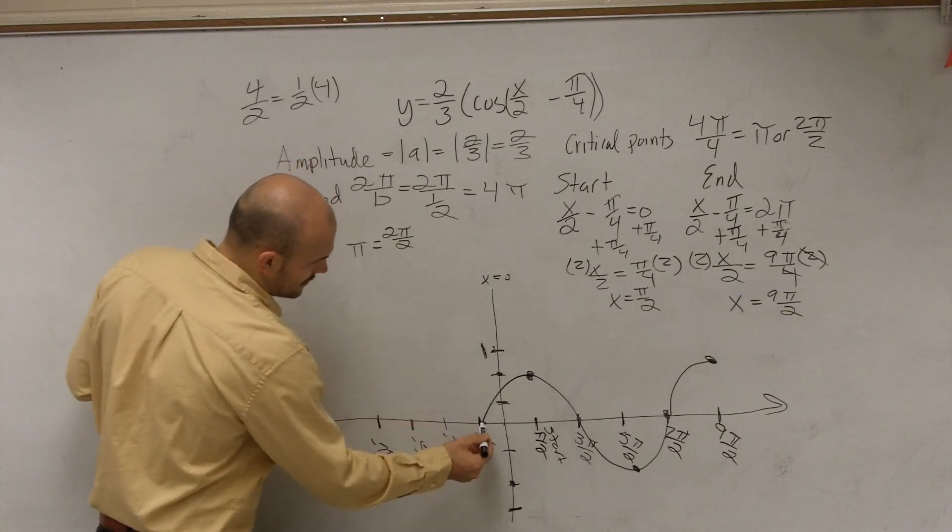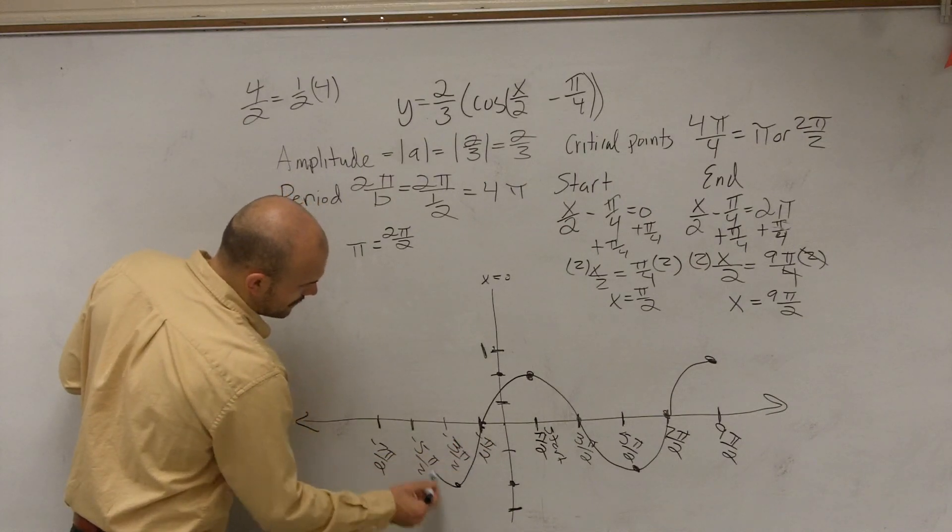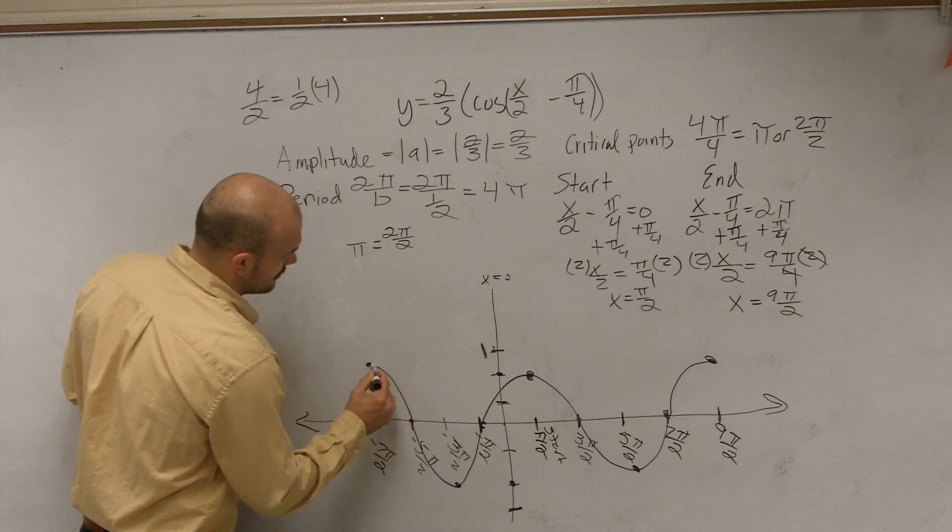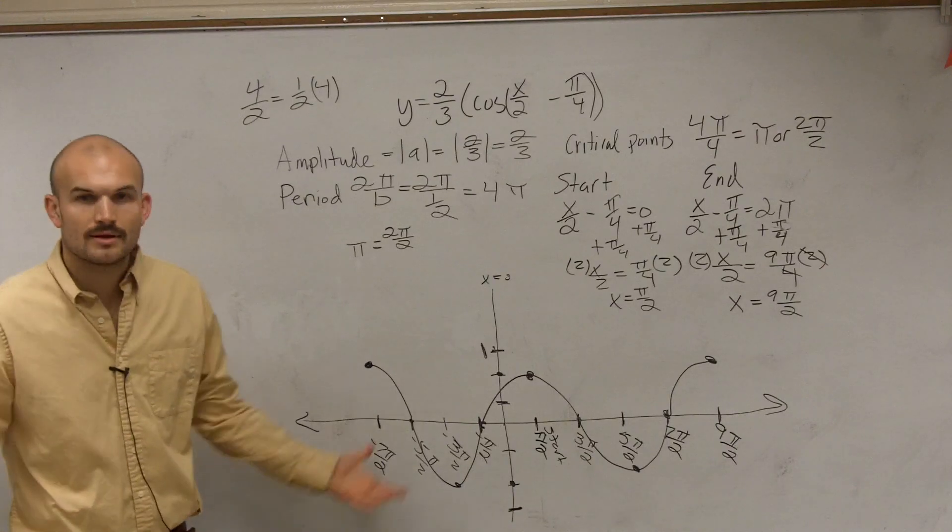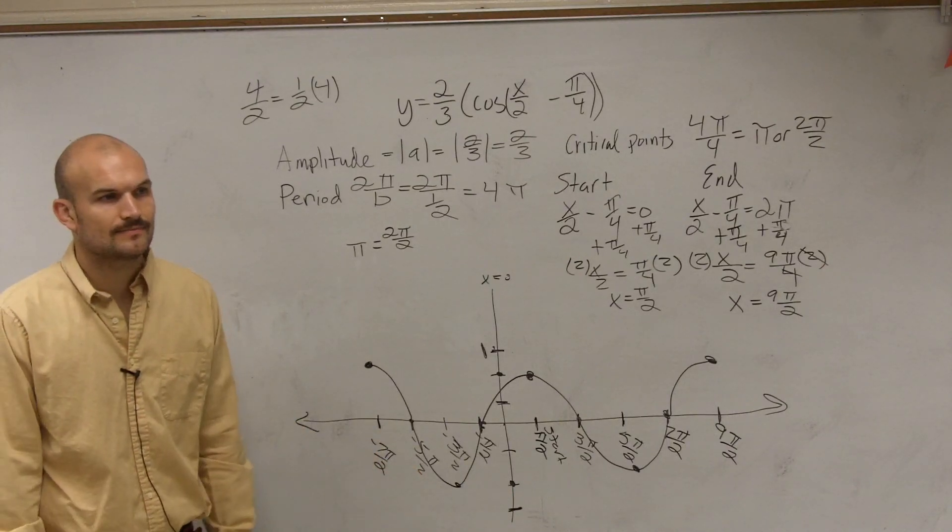So that would be like our initial period of our cosine graph with it being shifted over. And you can also just continue this down in the negative direction. And there you go. That's how you graph it.